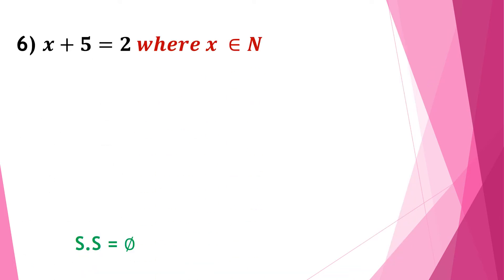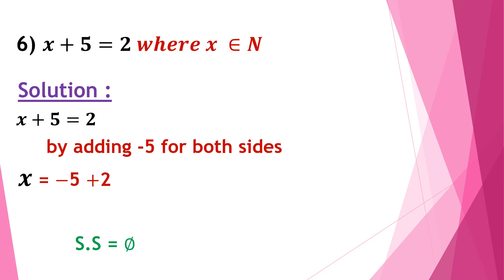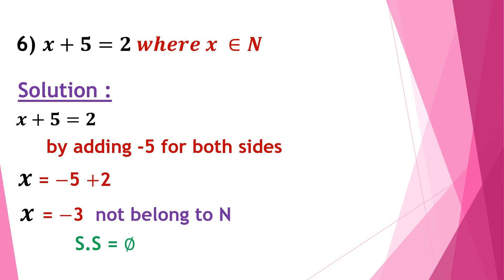Problem 6: x plus 5 equals 2, where x belongs to the natural numbers. By adding negative 5 to both sides, x equals 2 minus 5, which is negative 3. But negative 3 does not belong to the natural numbers, so the solution set is the empty set, phi.